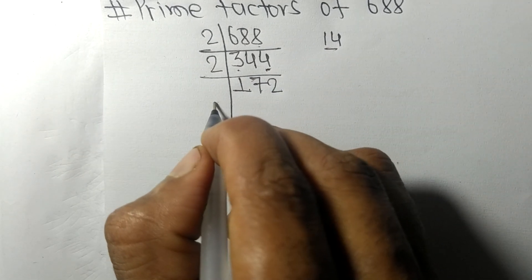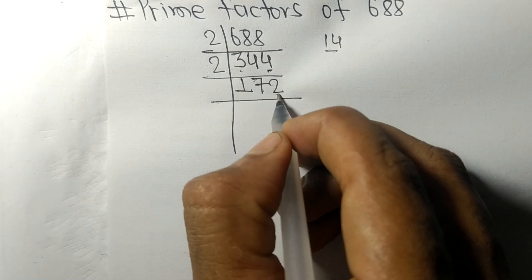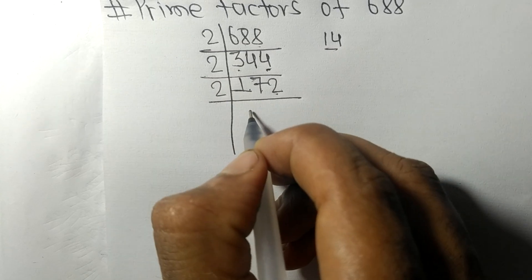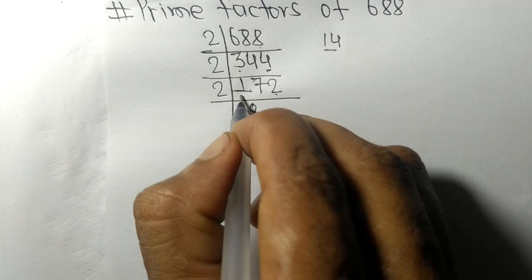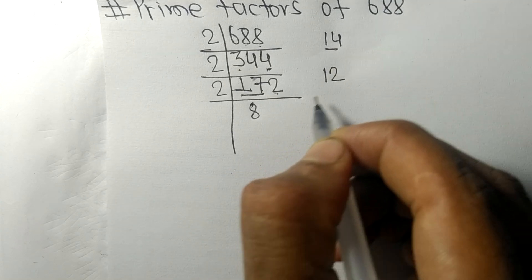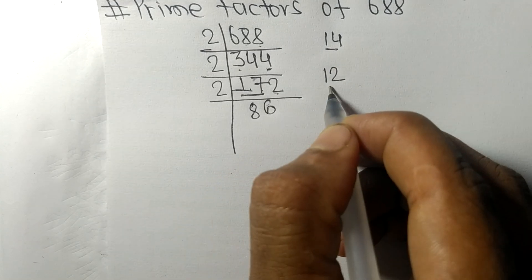Again it has an even number 2 at last, so it is divisible by 2. Two times 8 is 16, remainder 1. And 2, two times 6 is 2.